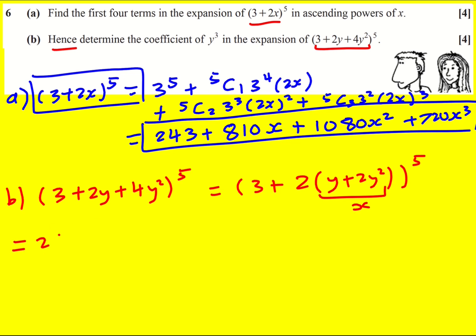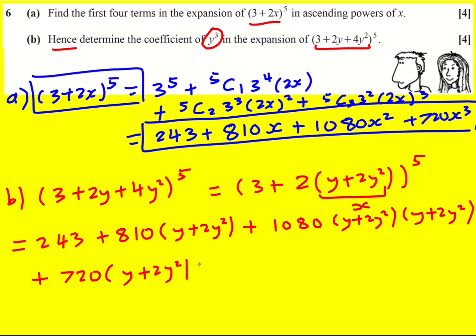I'm going to write down my result from part A, but with x replaced by (y + 2y^2). I could write it all squared, but I'm going to write it as a double bracket because we're interested in the coefficient of y^3. It'll be easier to see where it comes from. And the same here, I'll write it as a triple bracket.